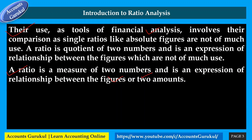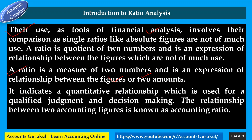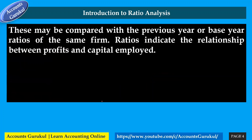A ratio indicates a quantitative relationship which is used for qualitative judgment and decision making. The relationship between two accounting figures is known as an accounting ratio. Ratios may be compared with the previous year or base year ratios of the same firm, and they indicate the relationship between profits and capital employed.